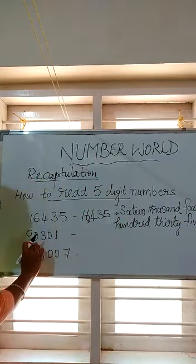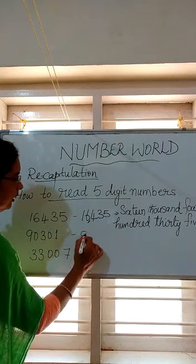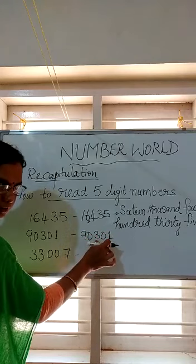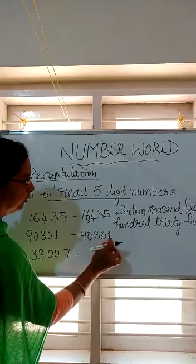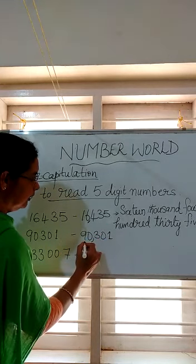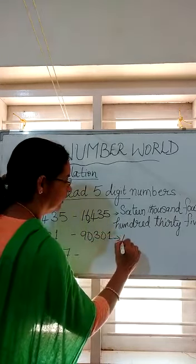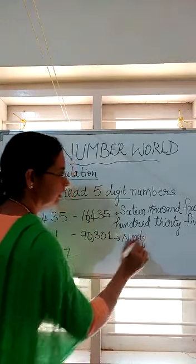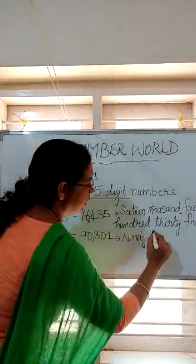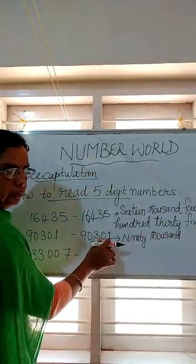Now let's try the next number: 90,301. Let us group it first. Group from the right end — the first group contains 3 digits: 3, 0, 1. Put a comma. The second group has the number 90. We read it as ninety, and the group name is thousands — ninety thousand. Then read the next group together: 301. So the number name is ninety thousand three hundred and one.